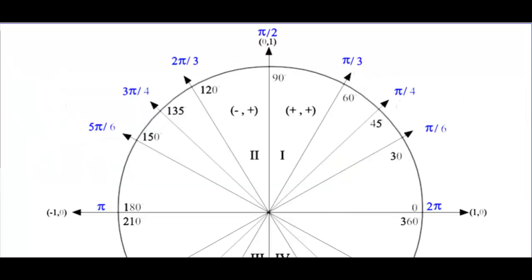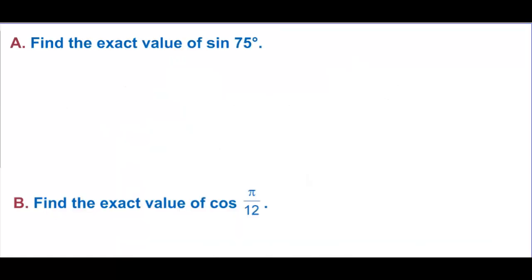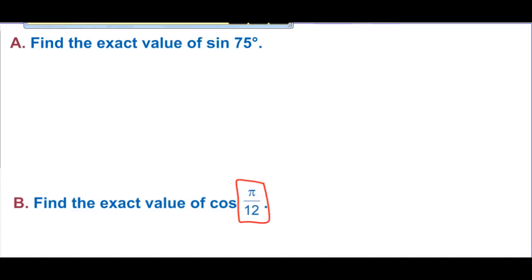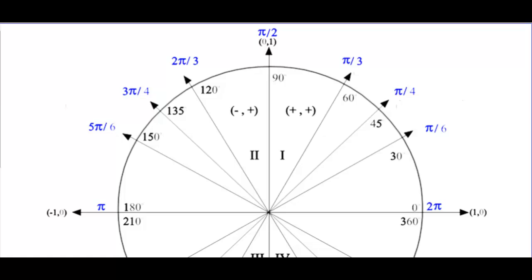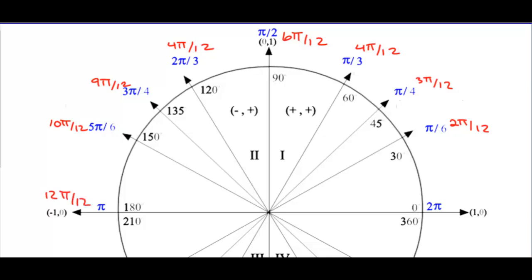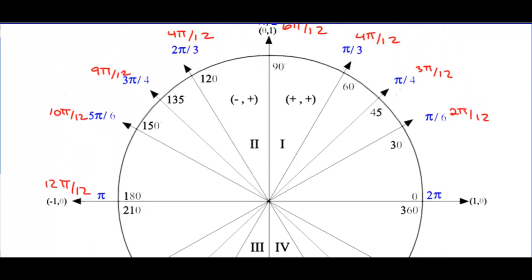We have the unit circle, and later we're going to be asked to find the exact values of some angles. We're going to be asked to find the exact value of cosine of pi over 12, so we want the unit circle values in terms of pi over 12. So we have 2 pi over 12, 3 pi over 12, 4 pi over 12, 6 pi over 12, 9 pi over 12, 10 pi over 12, and 12 pi over 12.